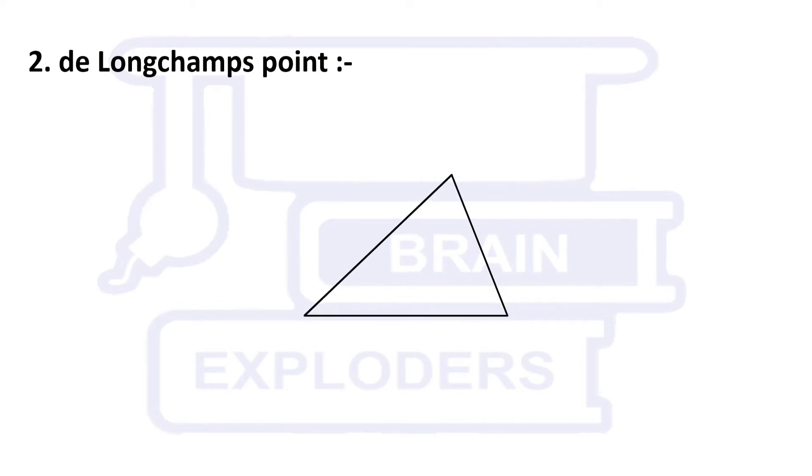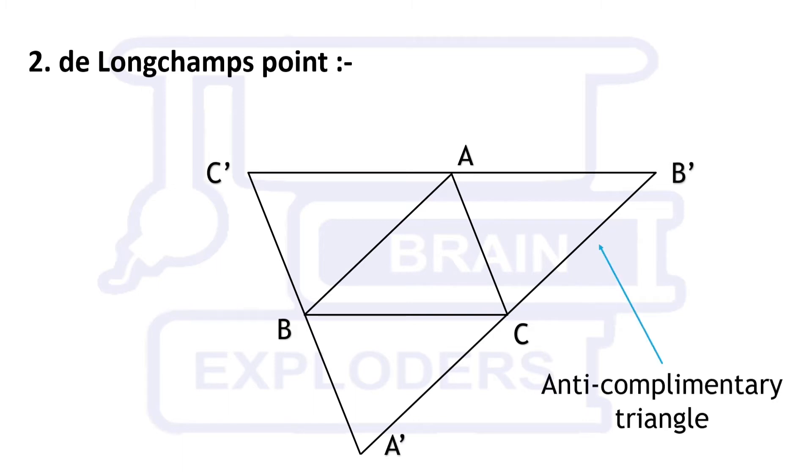There is an alternate way to find this point. Take a triangle ABC. Draw a line parallel to AB which passes through C. Do the same thing for other sides. This triangle formed is called anti-complementary triangle. Orthocenter of this triangle is the required point.